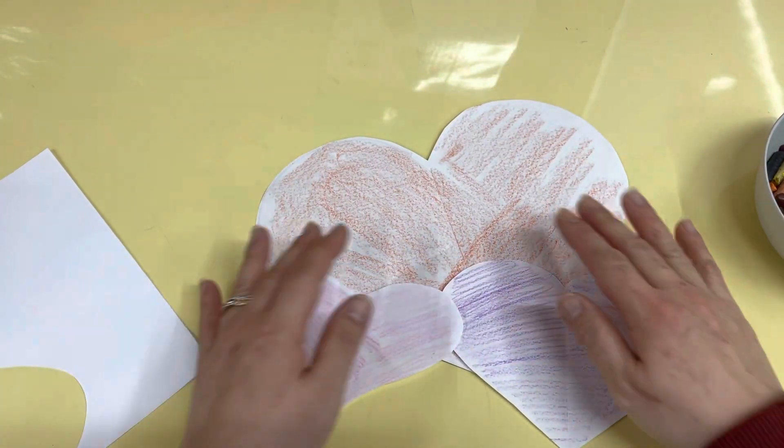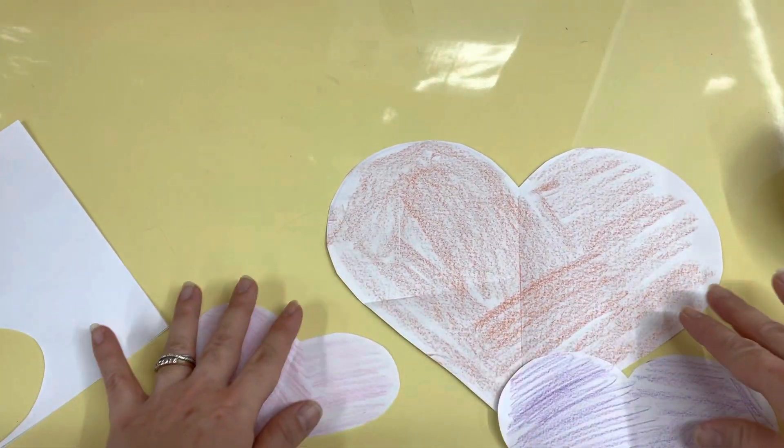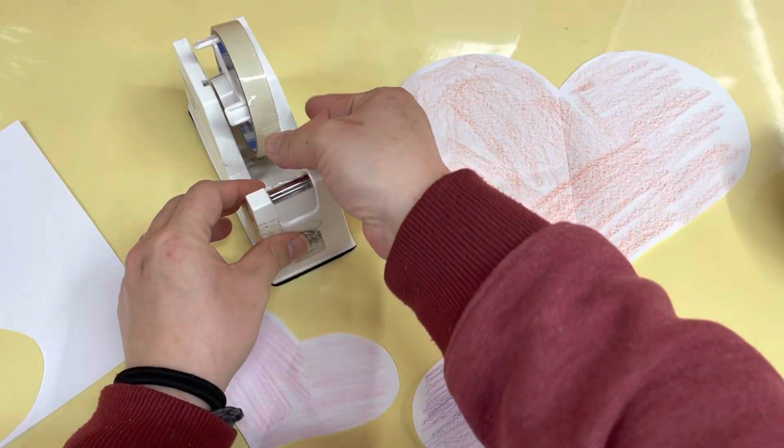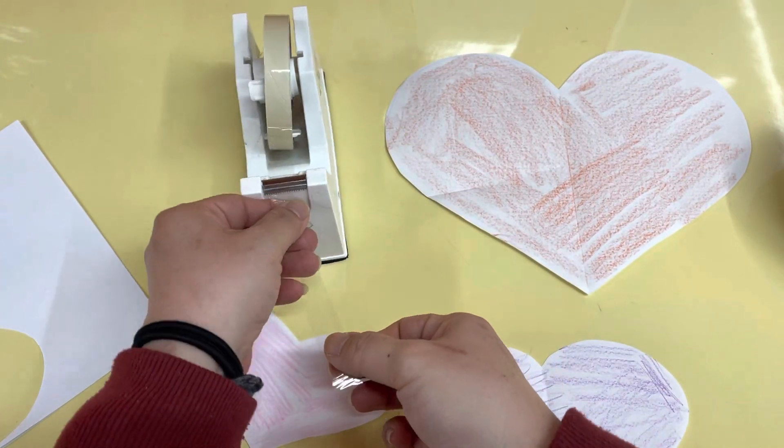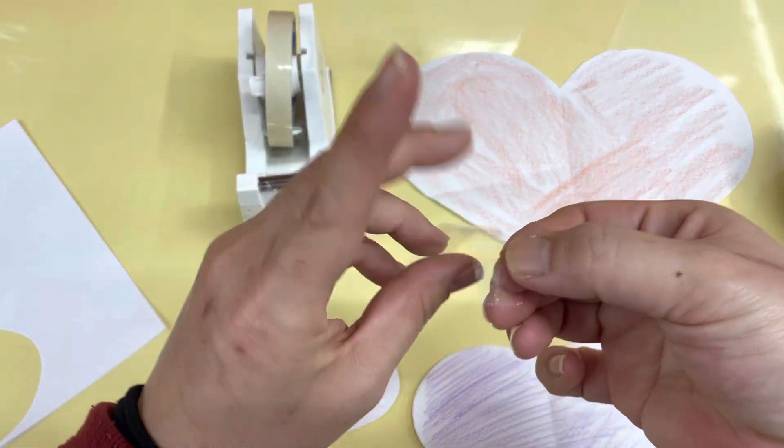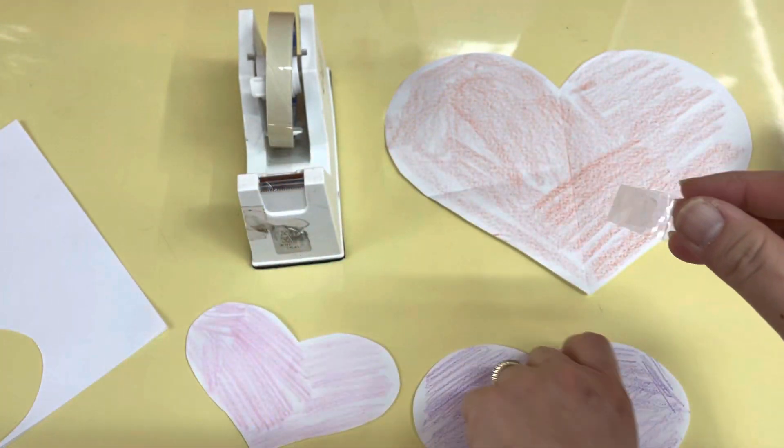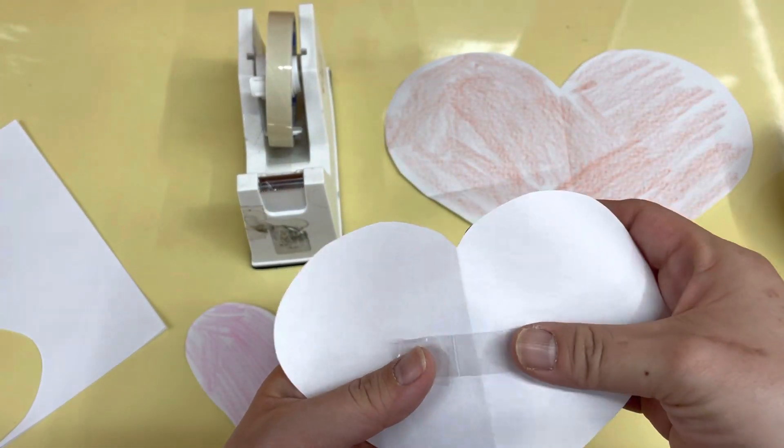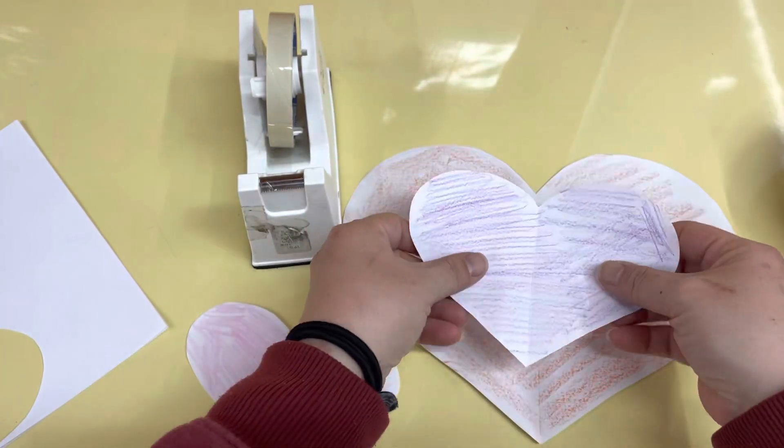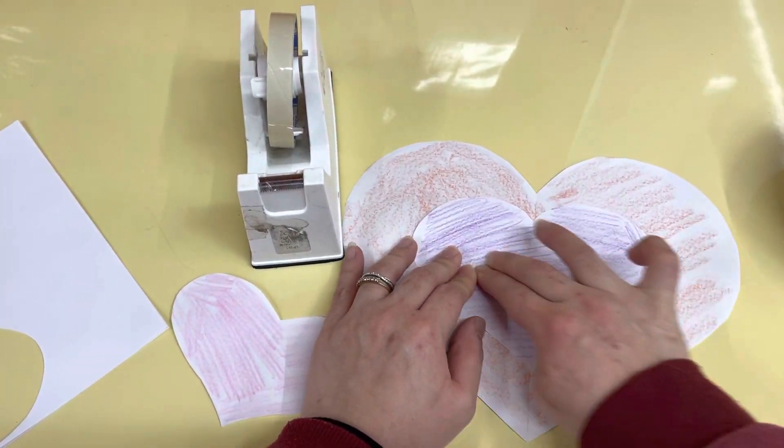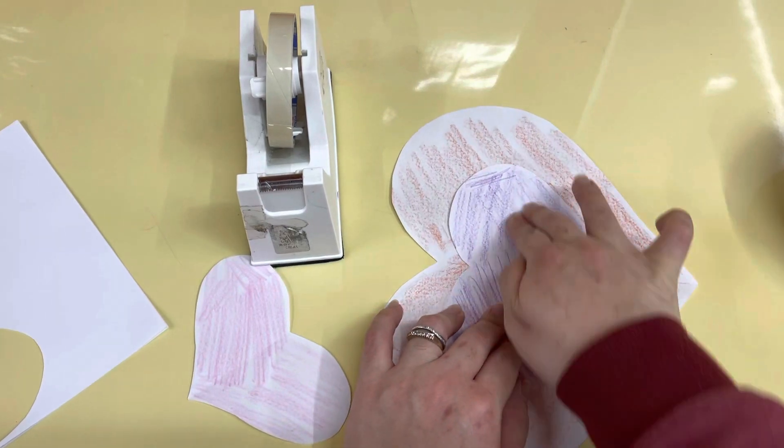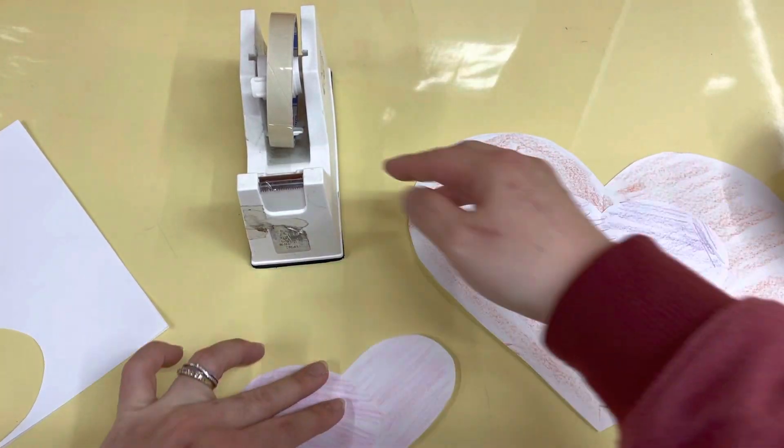You have your three hearts, so now what we're going to do with our tape. Take a big piece of tape, big. And then roll it like this, stick it here, and then put it on the big heart. Remember, push, push, push so it sticks. Okay, next one.